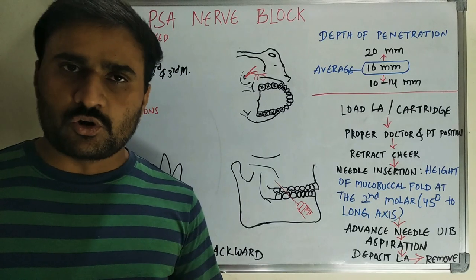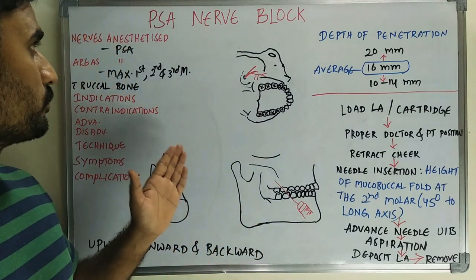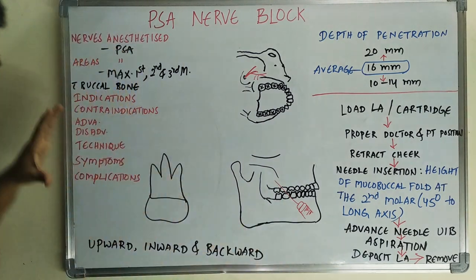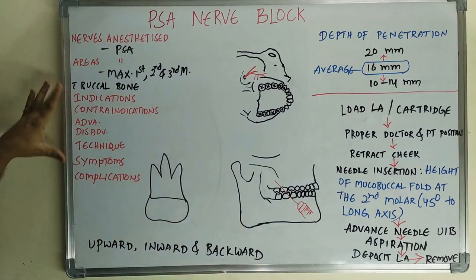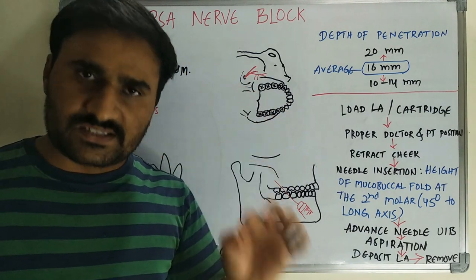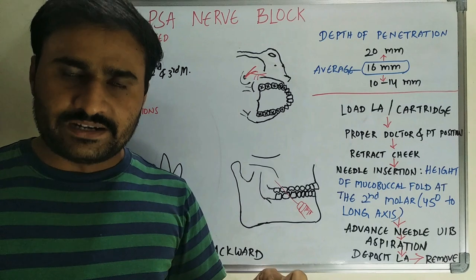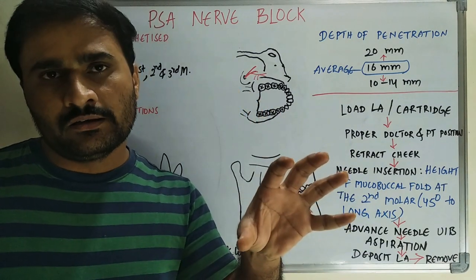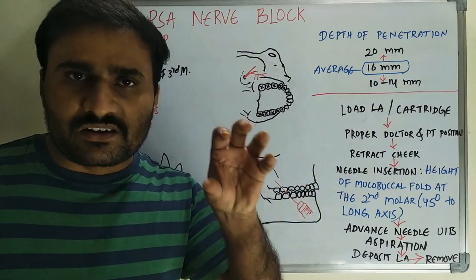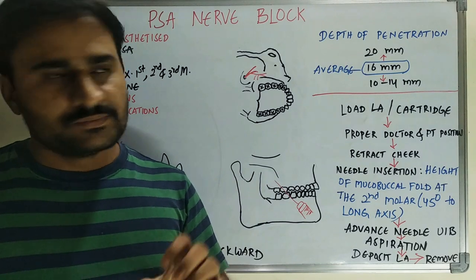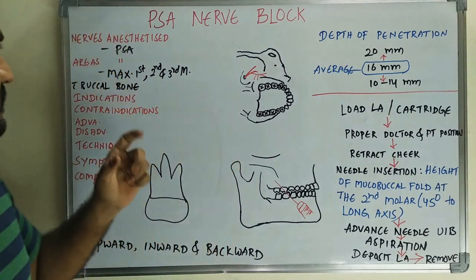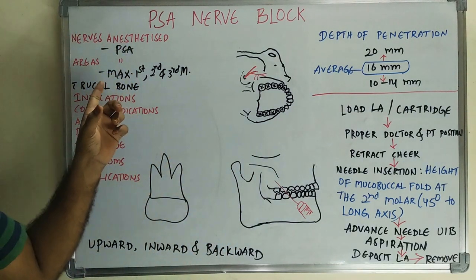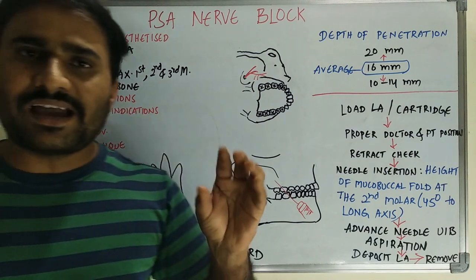In this video we will discuss the Posterior Superior Alveolar nerve block, that is the PSA nerve block. The nerve anesthetized is the PSA nerve, which is one of the branches of the maxillary nerve, given in the pterygopalatine fossa region.